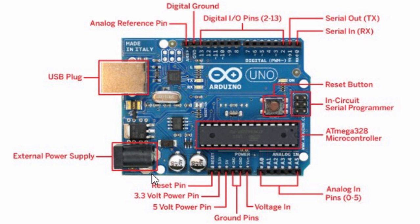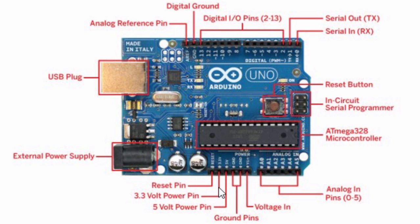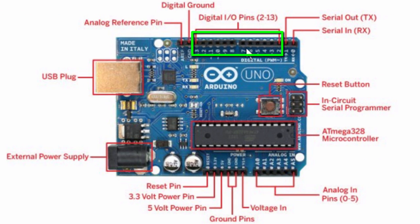The leads from a battery can be inserted into the ground pin and the voltage-in header of the power connector. The board can operate on an external supply from 6 to 20 volts. If supplied with less than 7 volts, the 5-volt pin may supply less than 5 volts and the board may be unstable. If using more than 12 volts, the voltage regulator may overheat and damage the board, so the recommended range is 7 to 12 volts.